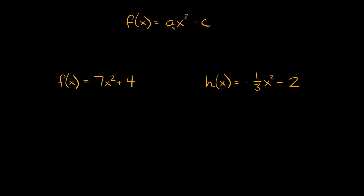So first of all, this 'a' right here is just a coefficient and it's either going to be positive or negative. If this number is positive, your parabola opens up like that. If it's negative, it opens down like that.